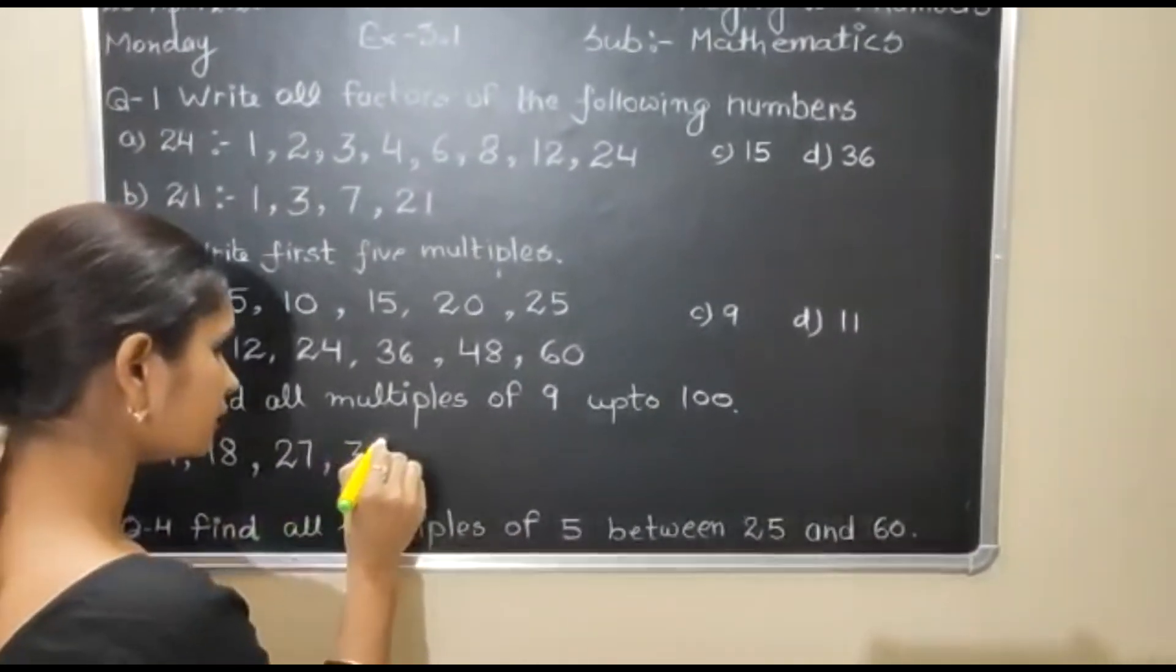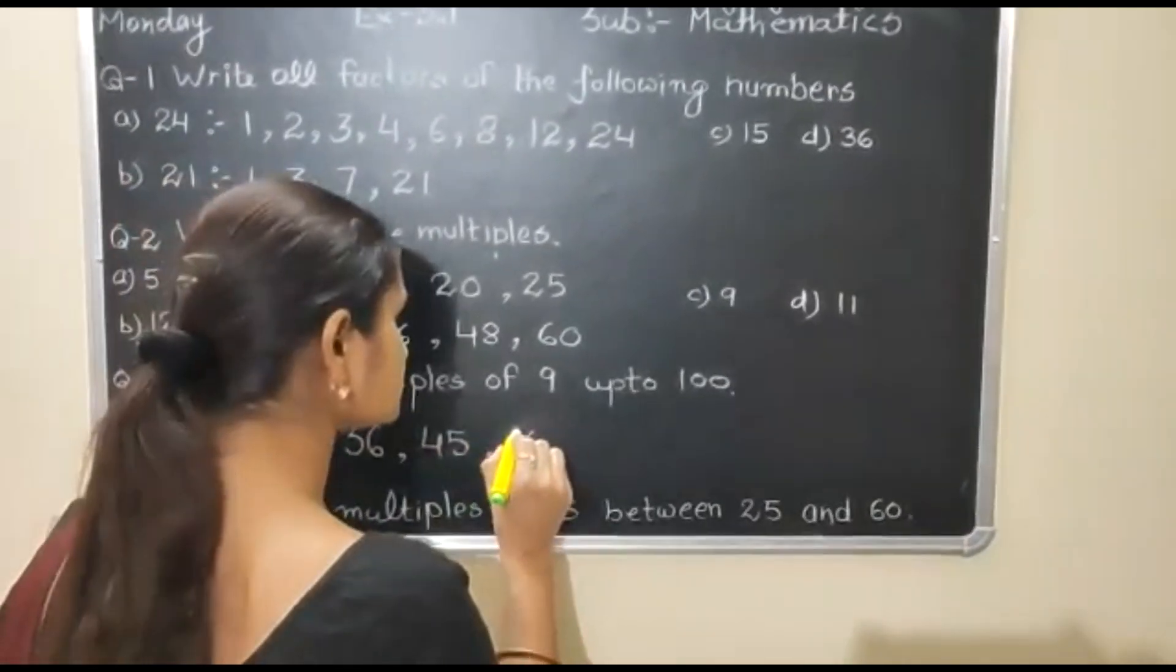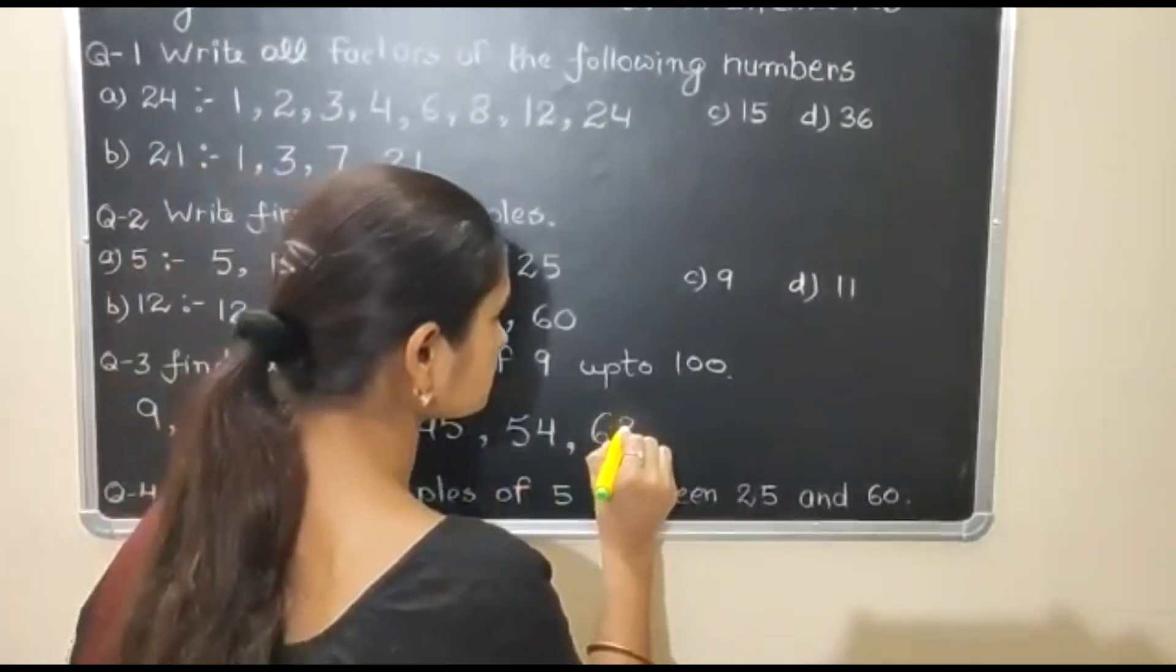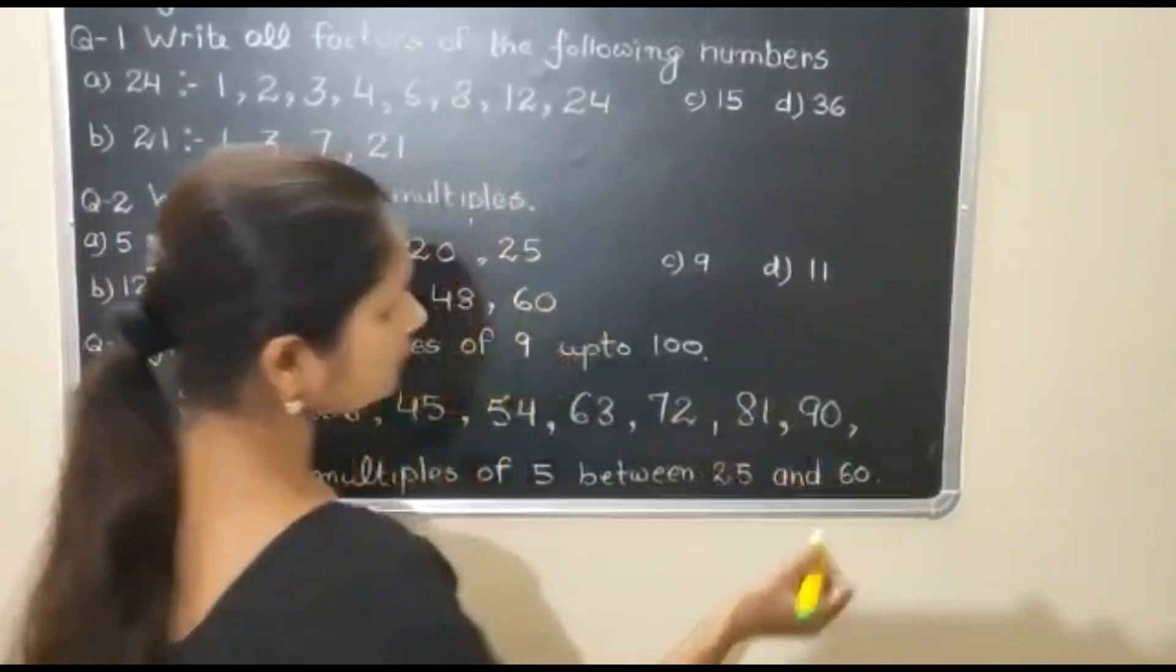9 fours are 36, 9 fives are 45, 9 sixes are 54, 9 sevens are 63, 9 eights are 72, 9 nines are 81.